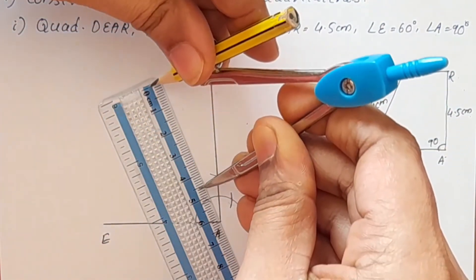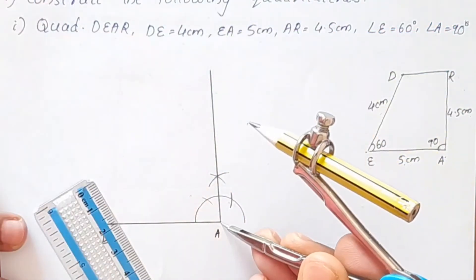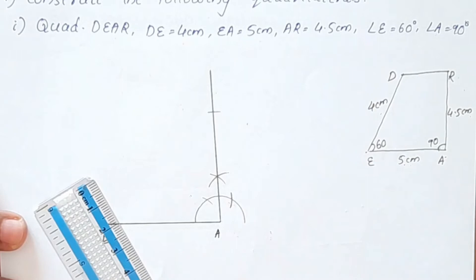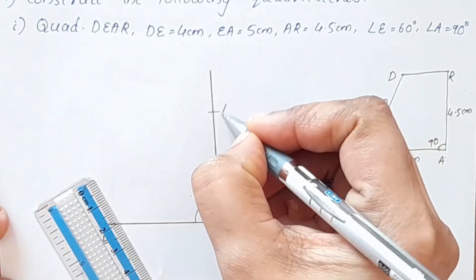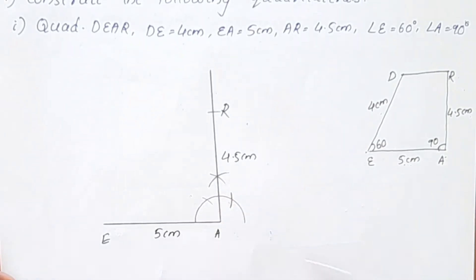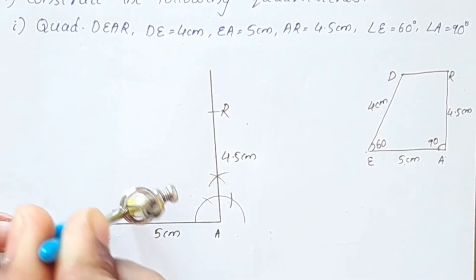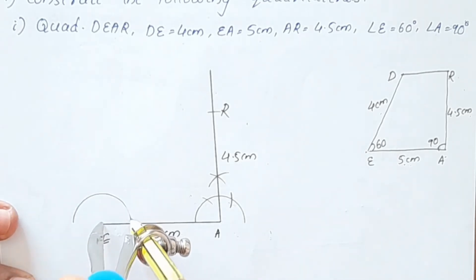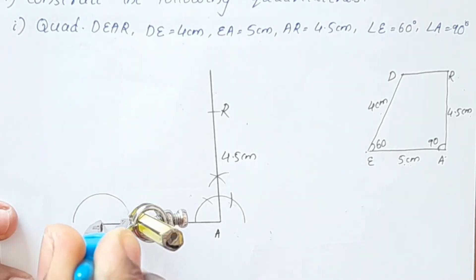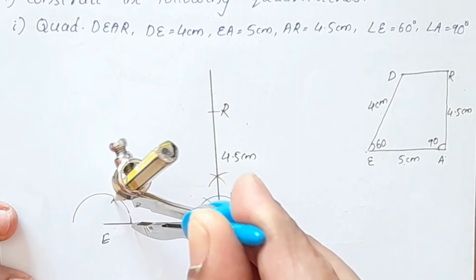Now we need to write the scale on 4.5 cm. We write the scale on the scale. TR is 4.5 cm, EA is 5 cm. We start the scale on the compass and add the measurement. This is the center.